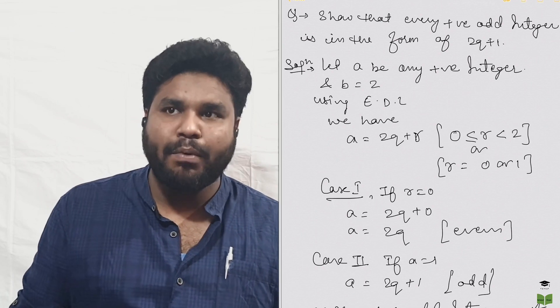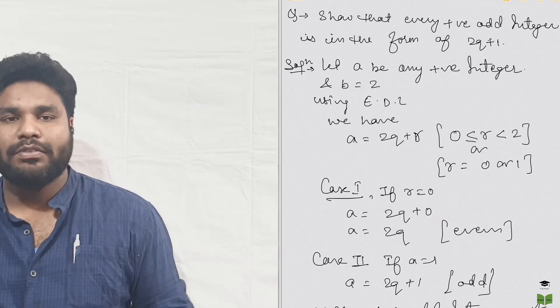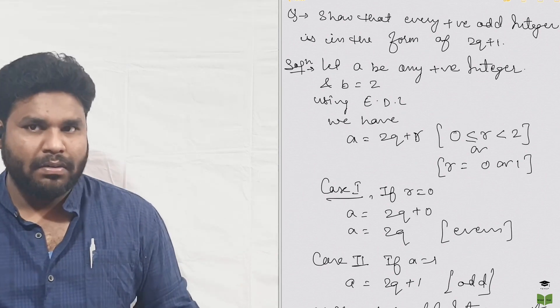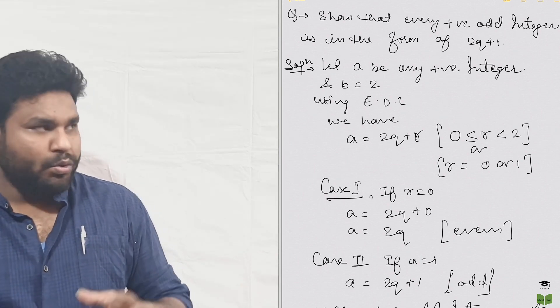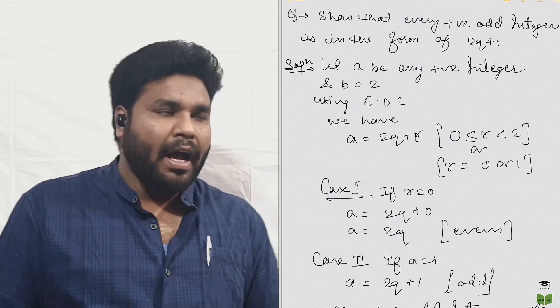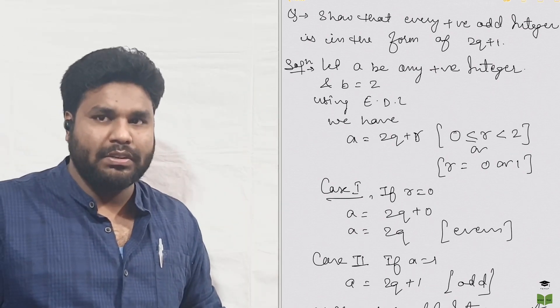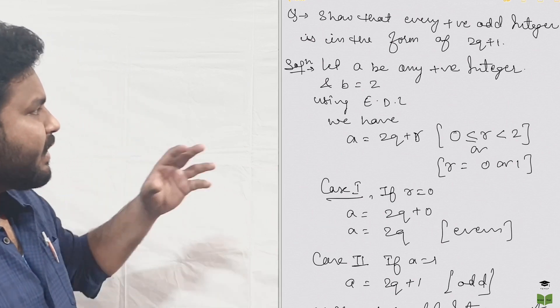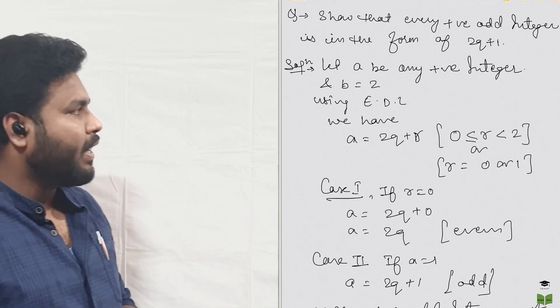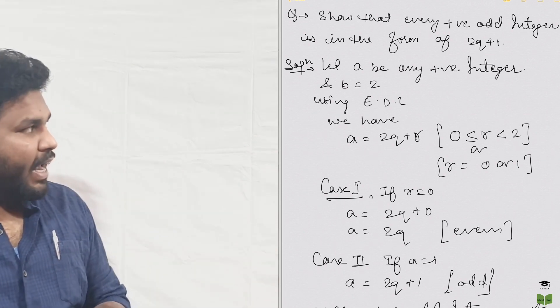Let's start with our first question. The first question is: prove that every positive odd integer is in the form of 2Q plus 1. To solve this question we need to use Euclid Division Lemma. Let us assume any positive integer as A and B as 2.